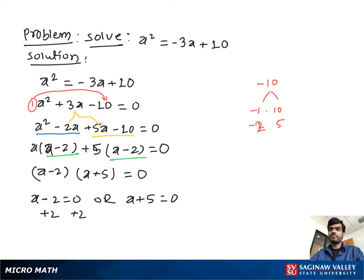If we add 2 on both sides we get a=2. If we subtract 5 from both sides we get a=-5. So our final answer is a=2 or a=-5.